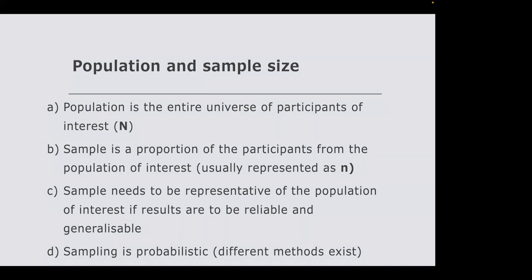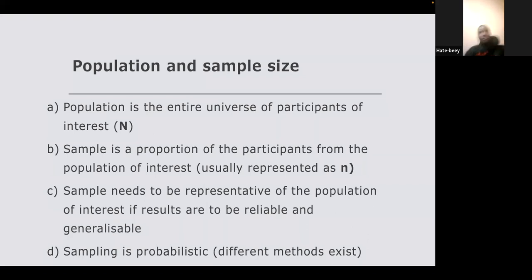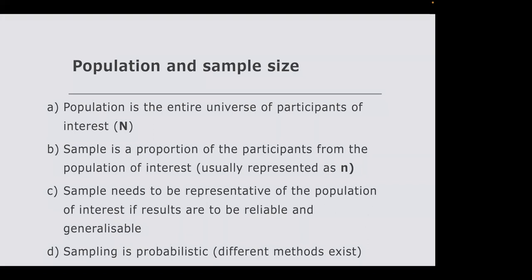There are two types of data from a collection perspective: primary data, which you collect fresh — you design a questionnaire, send it to participants, and extract the information — and secondary data, sometimes called desk data, which already exists in publicly available websites or datasets. Secondary data is common in social sciences like economics and finance, where collecting primary data would be very expensive and raise ethical issues.